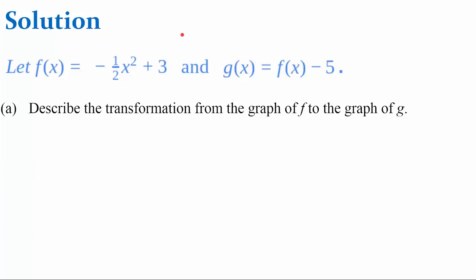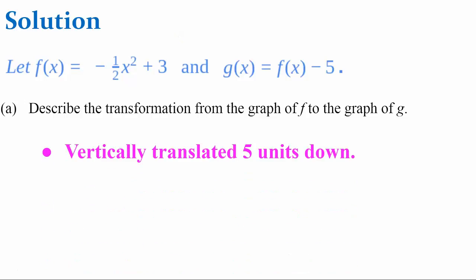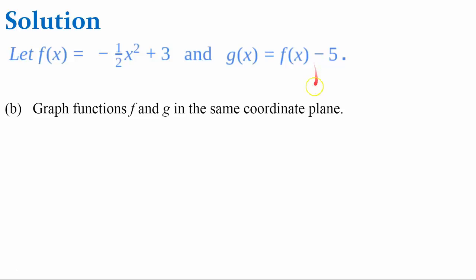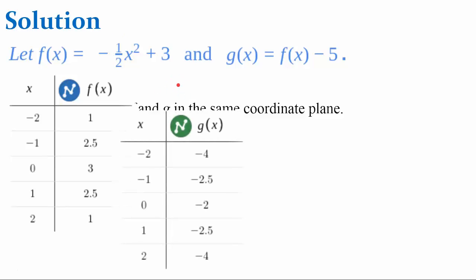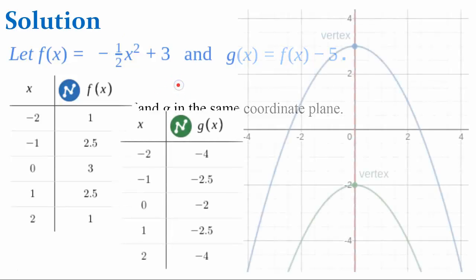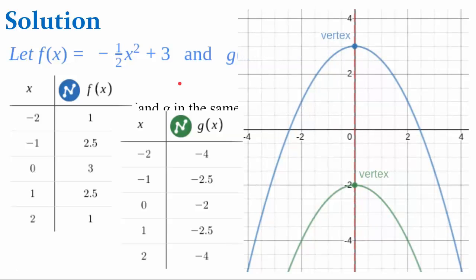First, let's talk about describing the transformation. Function g is vertically translated 5 units down from the graph of f. Now let's graph these functions in the same coordinate plane. Here's my table of values for function f — I've used the same five inputs, plugged them in, and found their outputs. I did the same for function g, and here they are graphed in the same coordinate plane.